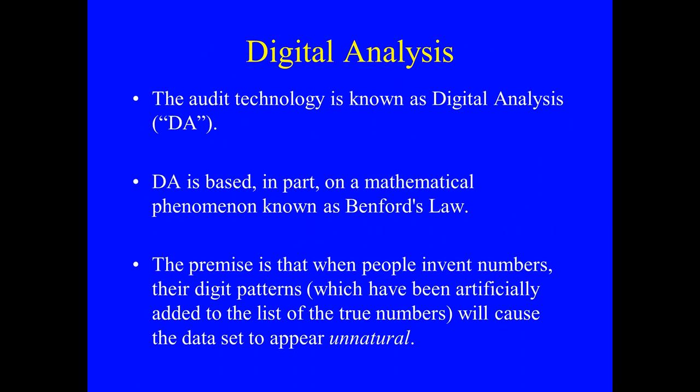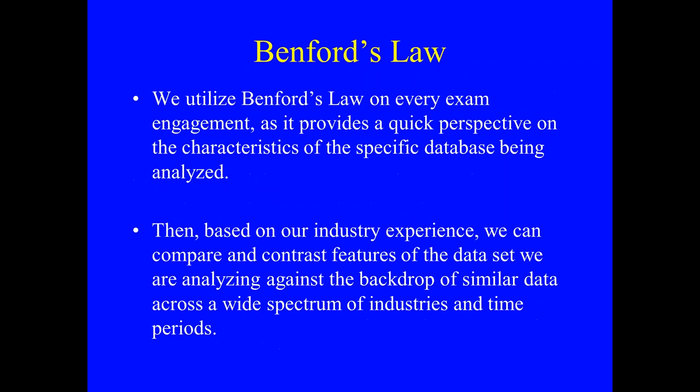In a nutshell, when people invent numbers, it will cause the data to veer away from the Benford curve. We all have inherent biases — my bias could be to the number nine. If we were to ask all of you to create a list of random numbers, there would be a unique pattern in each of those data sets, because Mark might be subconsciously biased to two, I may be biased to a nine. The patterns will jump out.